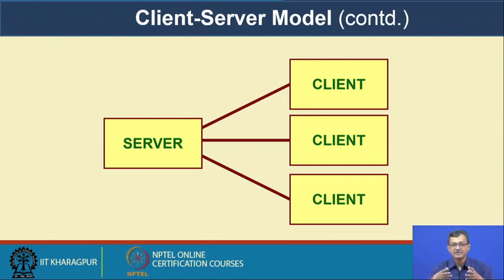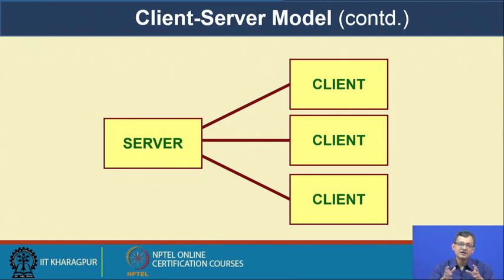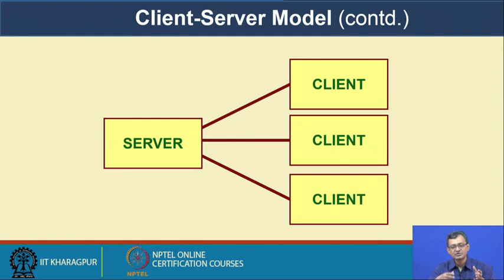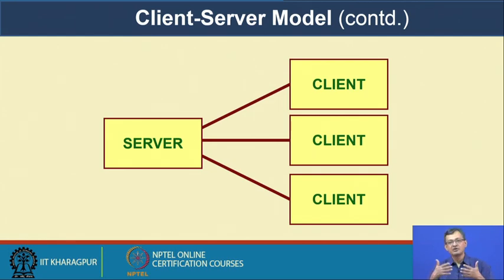With a concurrent server, a number of requests are being served together based on resource availability. Whether a server is iterative or concurrent depends on the application requirement. For some resources the server must handle requests iteratively, while in most cases — like HTTP servers — they can be served concurrently.